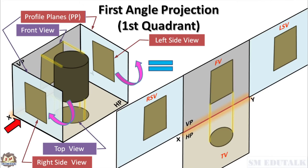Left side PP is turned left to VP and right side PP is turned right to VP. Now VP, HP, and the two profile planes all appear as a single plane. In first angle projection, the front view is drawn above the XY line and the top view below it. The left side view comes to the right of the front view, and the right side view comes to the left of the front view. India and European countries follow the first angle projection system.